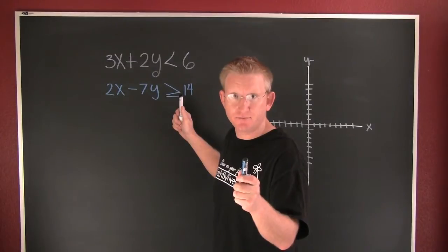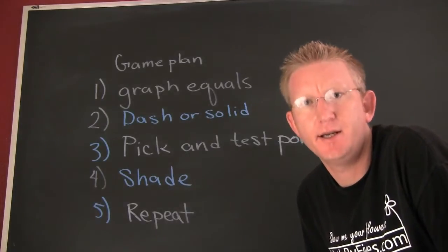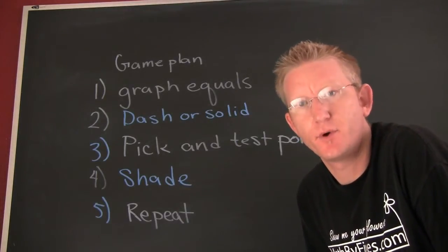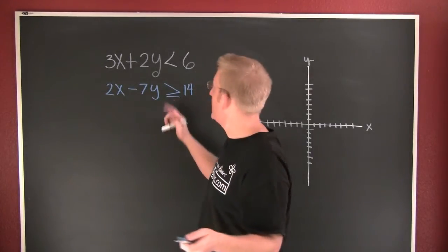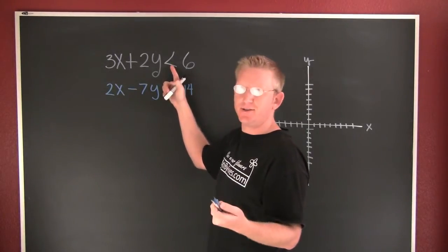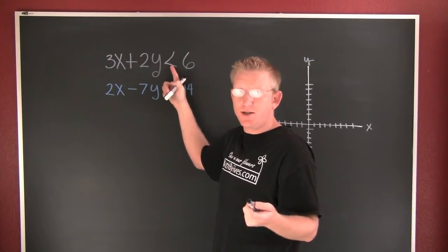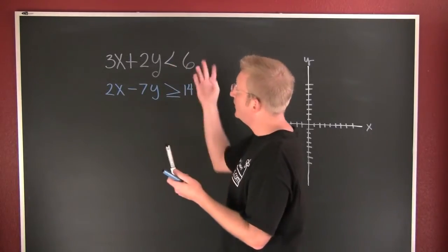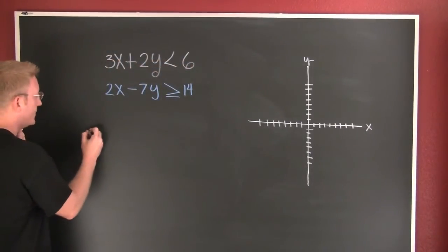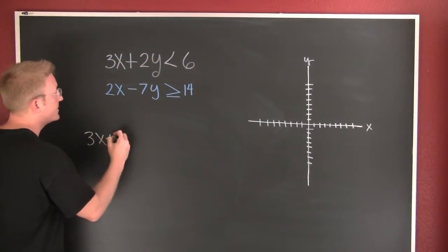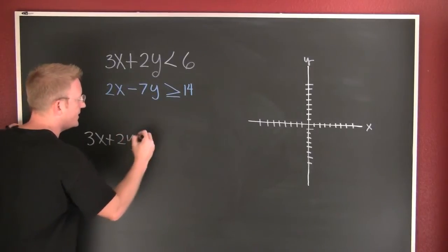So we're gonna follow our game plan. We need a game plan, and here's our game plan. First, what we're gonna do is we're gonna graph equals. When I say that, what I'm talking about is let's pretend that this inequality symbol is an equal sign.